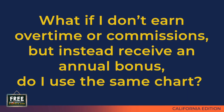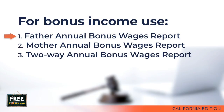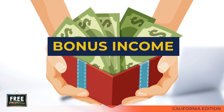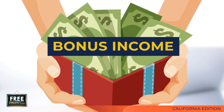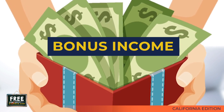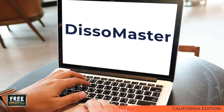What if you don't earn overtime or commissions, but instead receive an annual bonus? There is a different chart for annual bonuses. Instead of monthly overtime, some people receive one or more large bonus payments per year. For these situations, the Dissomaster Program has a father annual bonus wages report and a mother annual bonus wages report. The concept is the same as the overtime chart — you have a base spousal support number from both parties' base monthly income, and if they receive bonus income, you look up the percentage of additional spousal support to pay. You can access the annual bonus wages report the same way as the overtime report: click Report at the top of the page and use the drop-down menu.